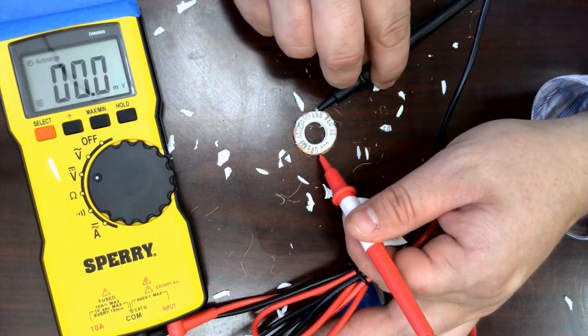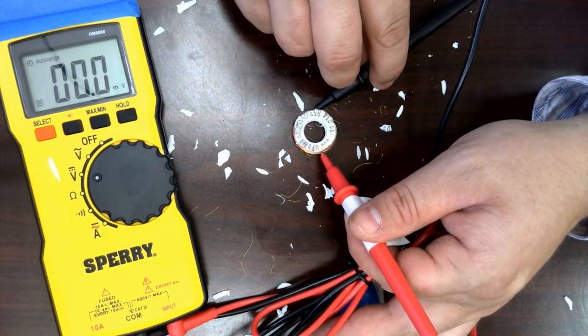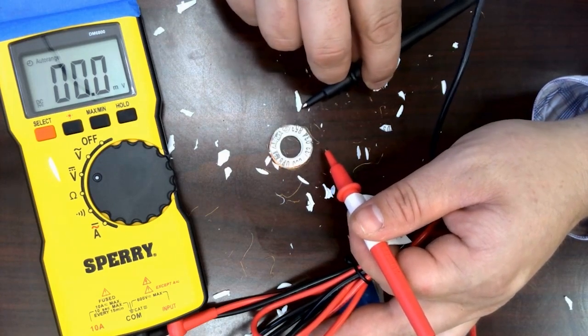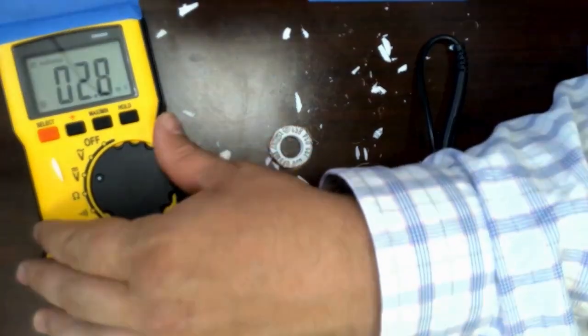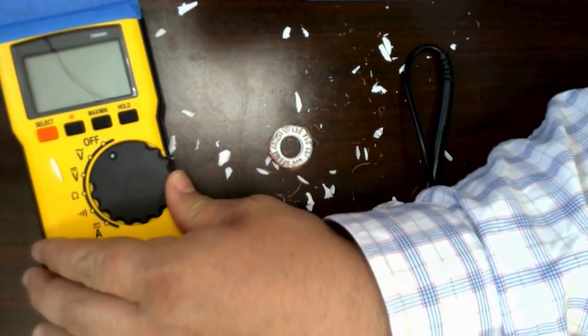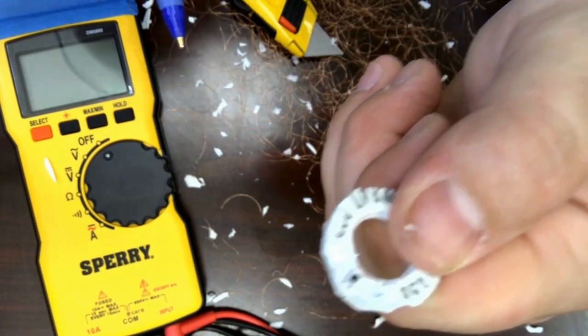As you can see we've hooked up the multimeter and we are getting a zero point zero reading from the tag at this point. So we'll turn off our multimeter and we'll continue to take it apart.